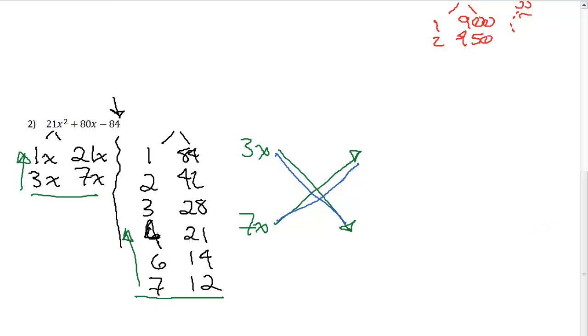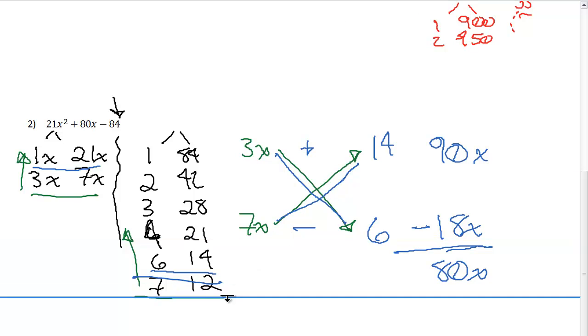And the 7 and the 12 don't work. So instead of going to 1 and 21, those are further apart. I'm going to go to the 6 and the 14. And again, the 14 has to go up here and the 6 has to go down here because of GCFs. And so 3x times 6 is going to give me 18x. 7x times 14 is going to give me 90x. I'm going to go ahead and, hey, is there any way to get 80x from these two? Yes, if I subtract. And so I need a positive and a negative.